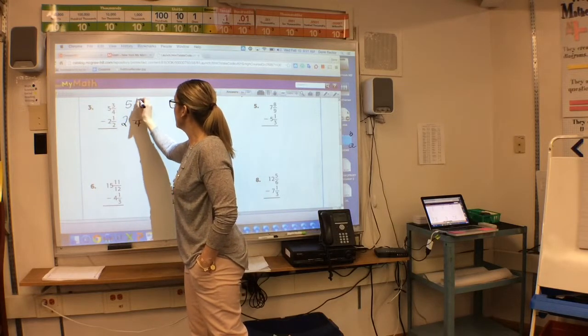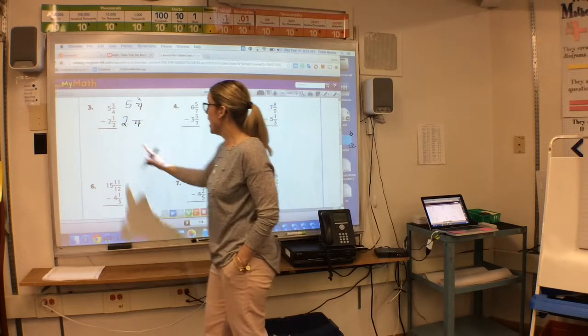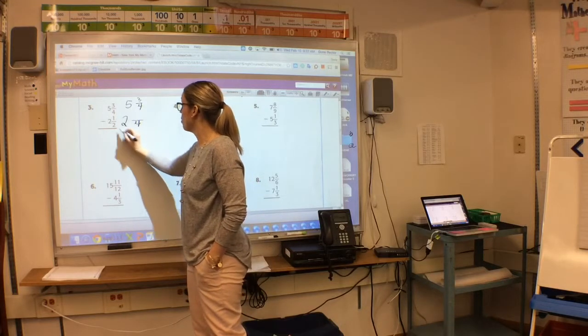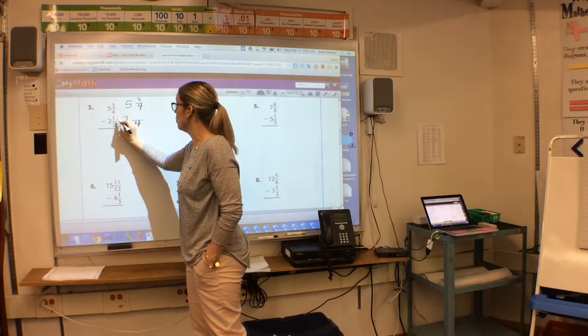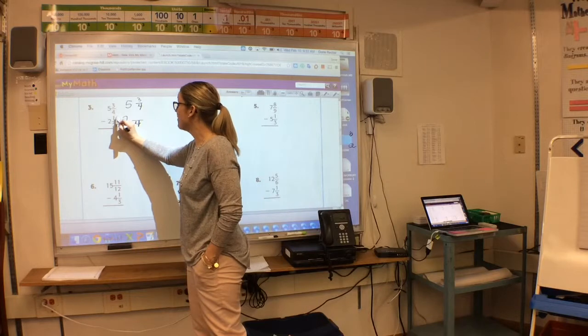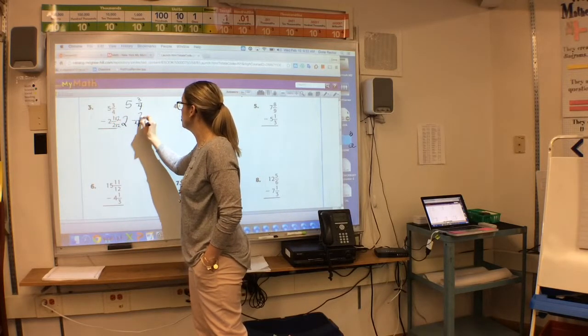I'm going to leave 5 and 3 fourths the same. Now I'm going to get that 2 to a 4. I'm going to multiply by 2. Whatever I do to the bottom, I've got to do to the top. 1 times 2 is 2.